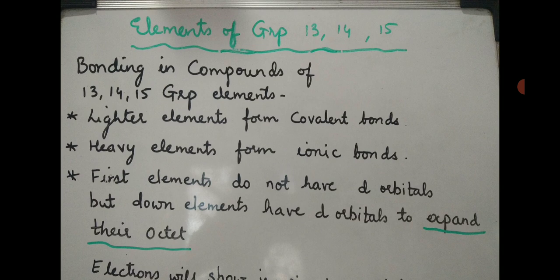The third point says that first elements do not have d-orbitals, but the lower elements in a group do have d-orbitals to expand their octet. The elements present on the upper part of a group are considered lighter elements. When you write the electronic configuration of upper elements, you will find that they have no 3d orbital — no 3d, no 4d, no 5d. Because they do not have d-orbitals, they cannot expand their octet.